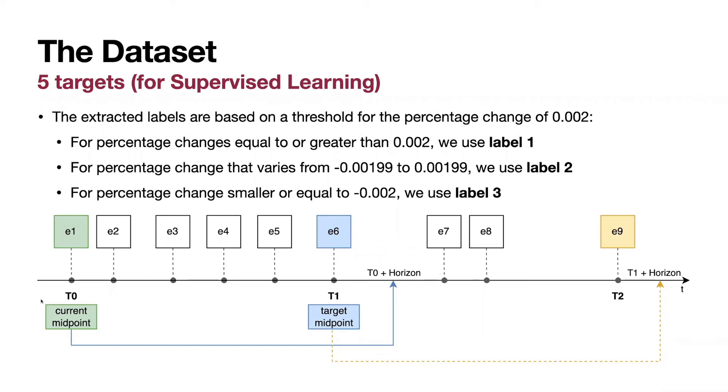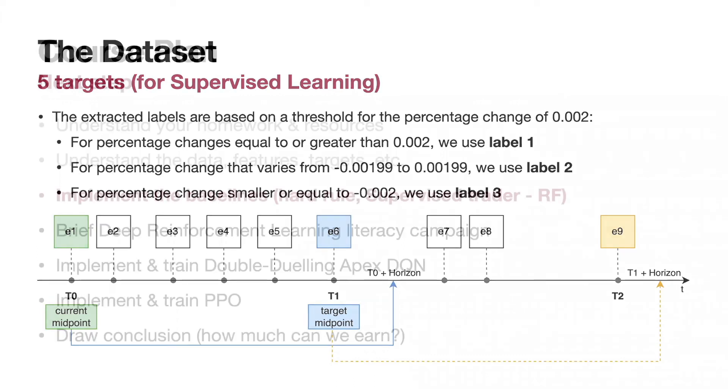Essentially, the authors generated five horizons in the future from the less distant to the more distant. At each of the horizons, authors generated just a categorical expected direction of movement of the price. Will the price stay the same, label 2, go up, label 1, or go down, label 3?